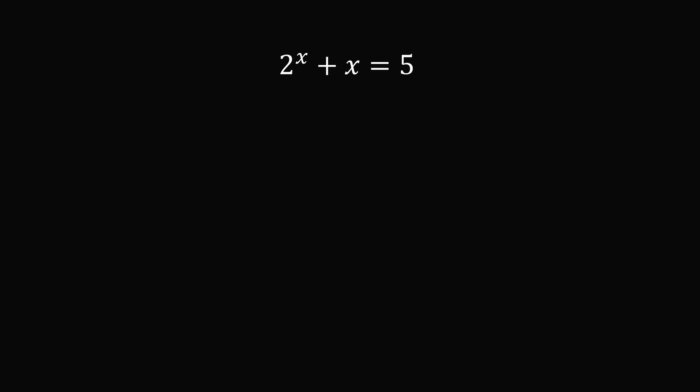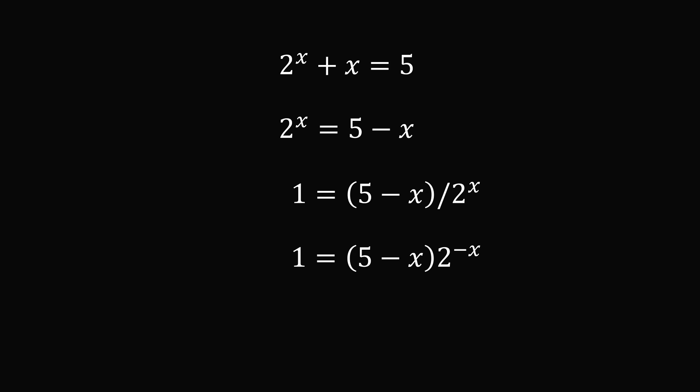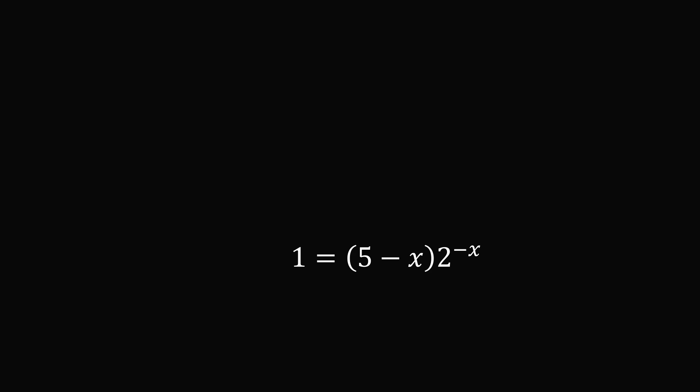Now let's solve this problem using the Lambert W function. We have 2 to the power of x plus x equals 5, but we need to transform it into a usable form. We want to get it into the form x multiplied by e to the power of x equals some constant. We start by subtracting x from both sides, then divide both sides by 2 to the power of x. Since 1 over 2 to the power of x equals 2 to the power of negative x, we continue simplifying.